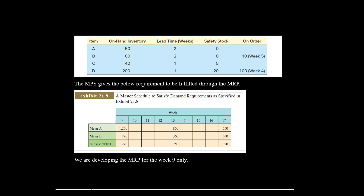What is the MPS telling us? In the ninth week, we require 1,250 units of meter A and 470 units of meter B. At the same time, we also require 270 units of sub-assembly D, since these sub-assemblies are sometimes required in the market as spare parts. There are also requirements given for week 13 and week 17, but in this problem we are concentrating on the week 9 MRP.